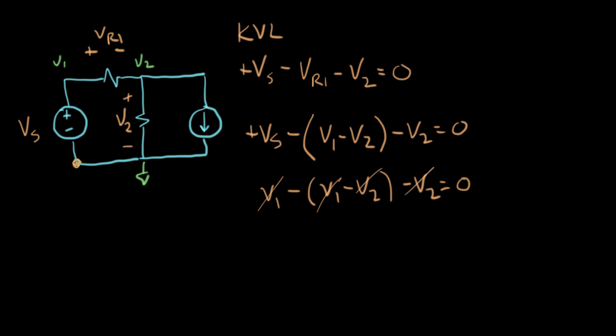This equation is automatically true if we write Kirchhoff's current law in terms of node voltages. That always turns out to be the case. That's why we don't bother to do it. We know it's going to be true. So that's a nice feature of the node voltage method.